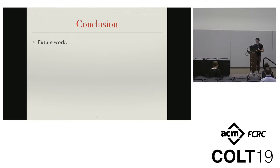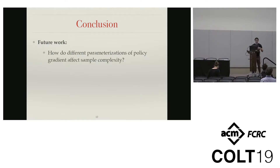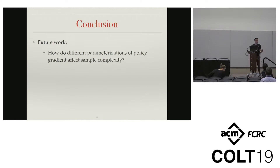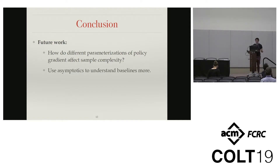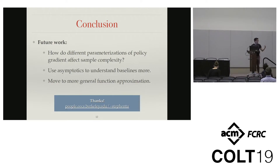That wraps up the results. Interesting open questions this work brings up include: how do different parameterizations affect policy gradient? We studied policy gradient searching directly over controller parameters, but in controls there are different ways to parameterize your controller — for instance a Youla parameterization — and that might affect sample complexity. Another open question is to use this asymptotic framework to understand the effect of baselines in policy gradients better. And obviously in the future we want to move towards more general function approximation settings. If you want to see the paper, you can find links on my website. Thank you.